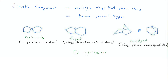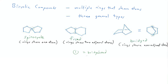There are three general types of bicyclic compounds. The first is spirocycles. A spirocyclic compound has two rings that share one atom, which I have circled here. That atom shared between the two rings is called a bridgehead.